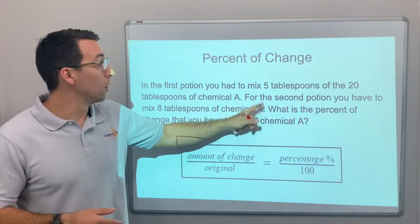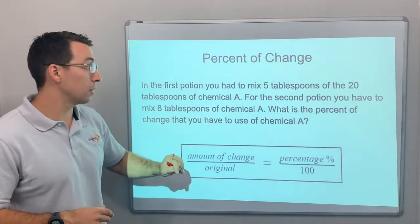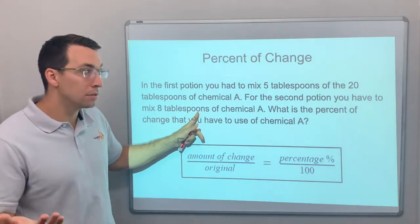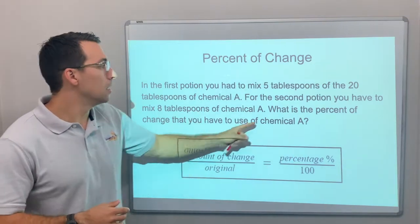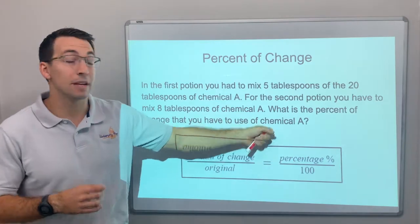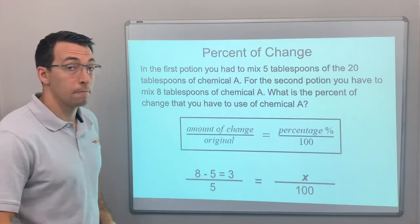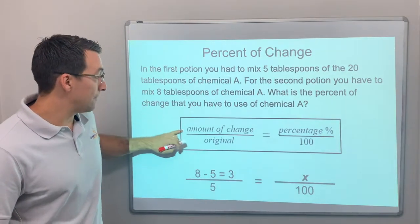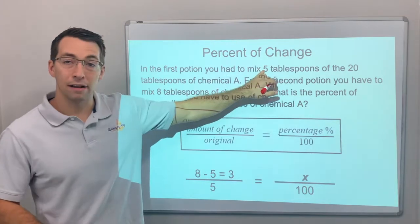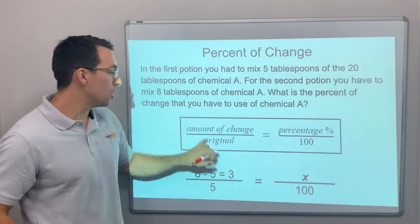So what is the percentage of change that you have to use of chemical A? All right, so you make one potion and then you make a second potion. Well, the amount of change, look, 8 minus 5, well that's 3.